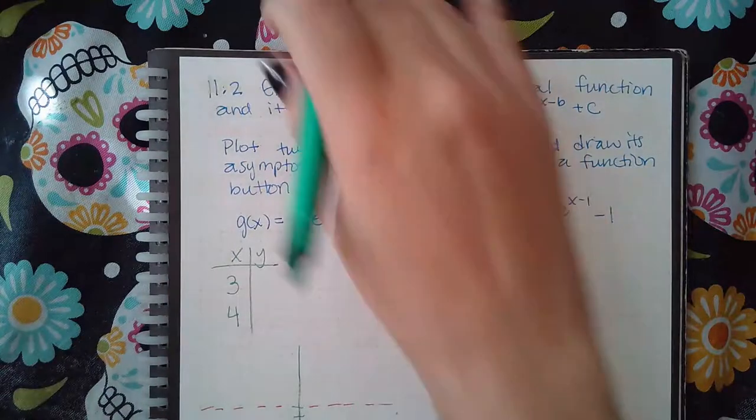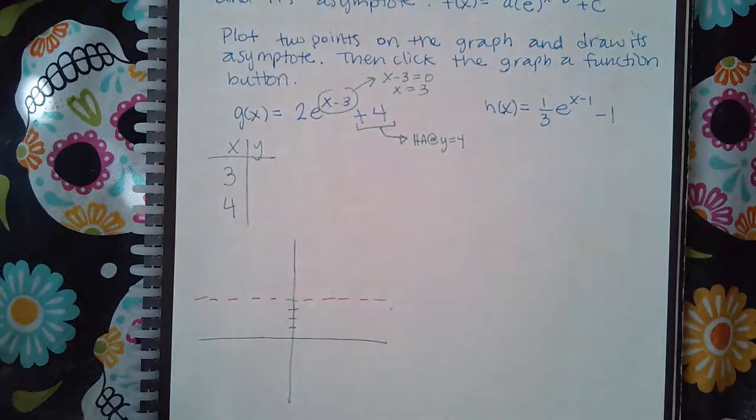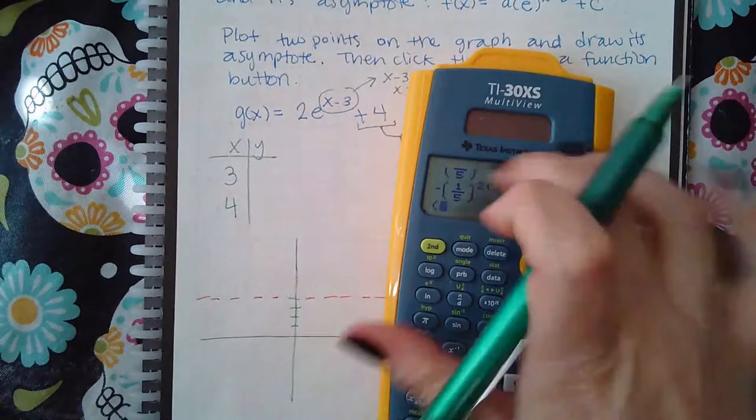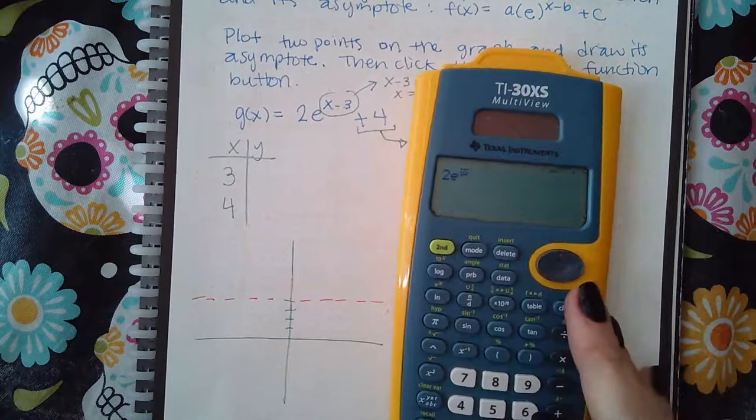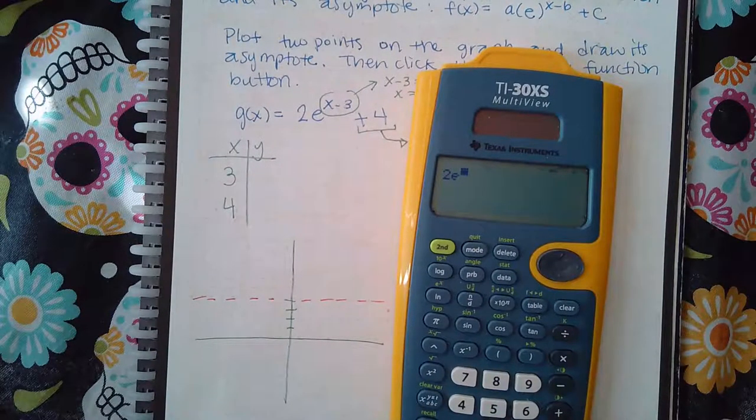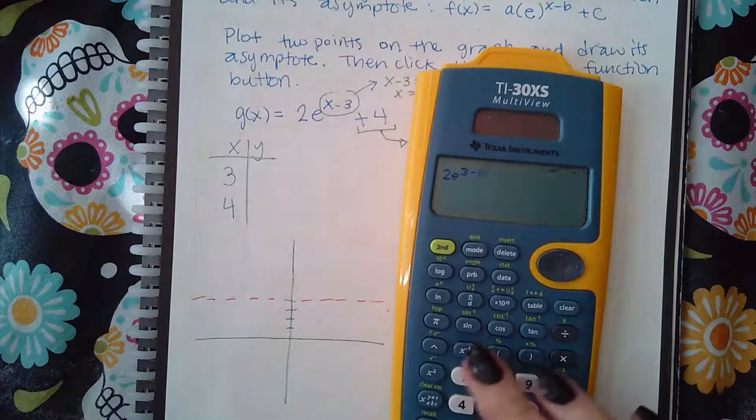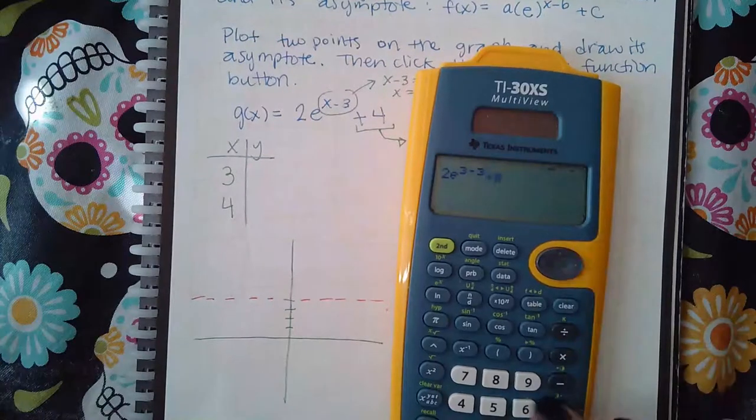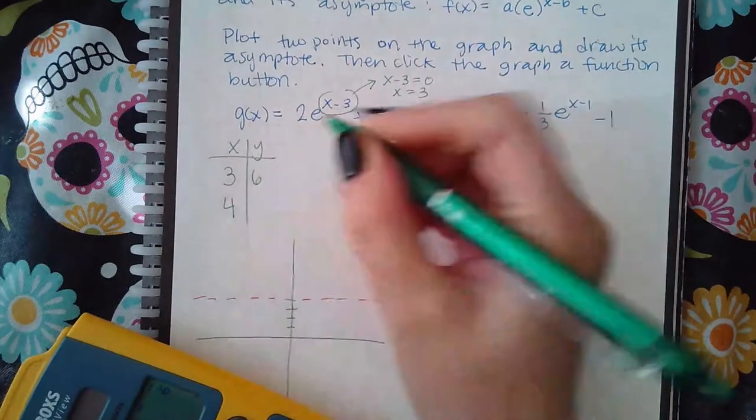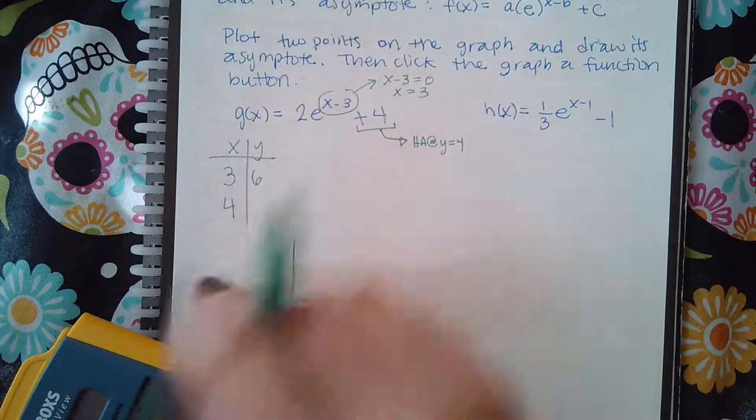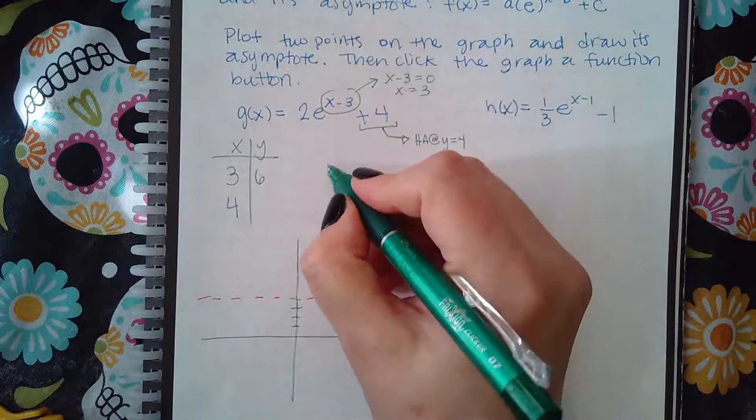Now it's just a matter of me finding the coordinates that I need and then plugging them in there. So if I go in my calculator and I click 2e to the 3 minus 3 plus 4, I get six. And actually I should do this by hand because you're gonna have to plot the point and you're not allowed to put decimals, you have to have the exact answer.